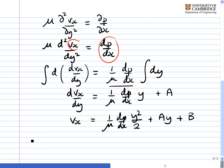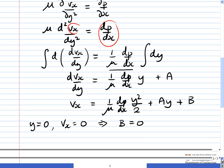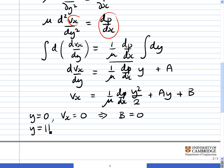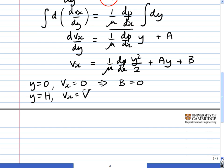The first boundary condition is that at y equal to zero, Vx is equal to zero. The no-slip boundary condition at the bottom wall. By inspection, you can see setting y to zero implies that B is equal to zero. The next boundary condition is that at y equal to big H, Vx is equal to big V. This is going to take a bit of algebraic manipulation now.